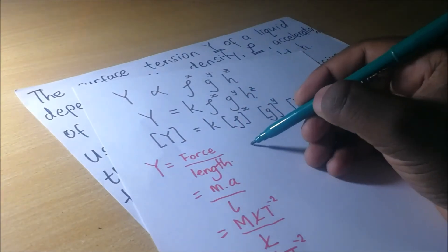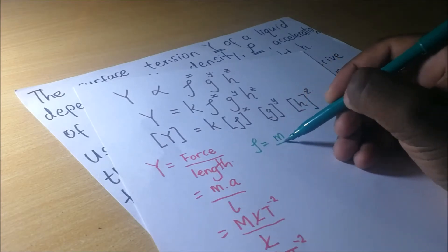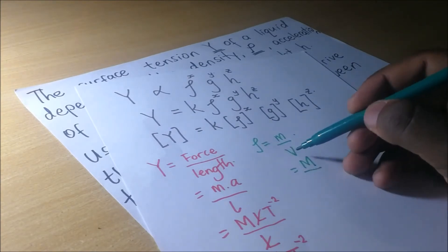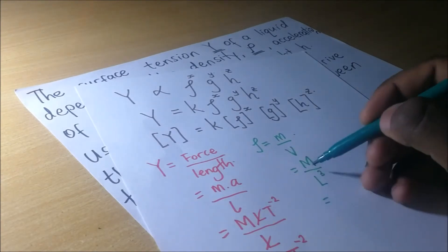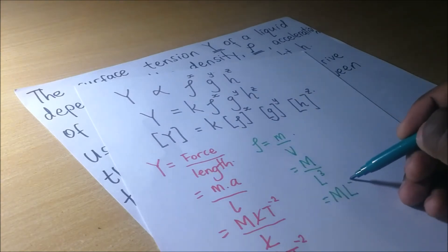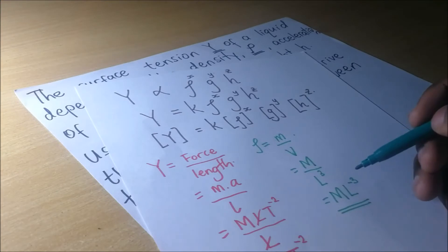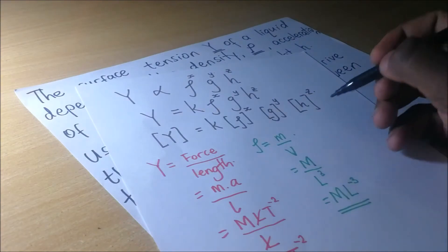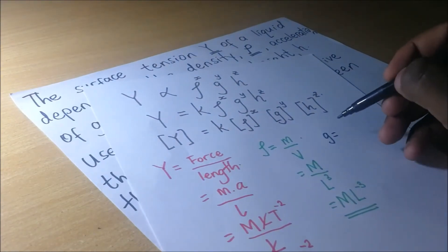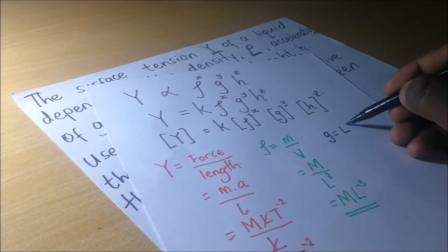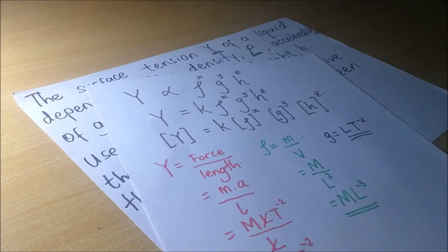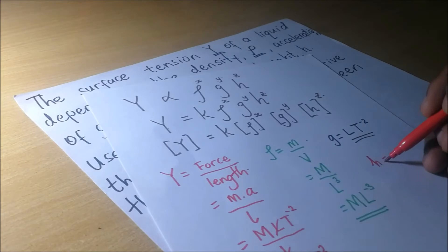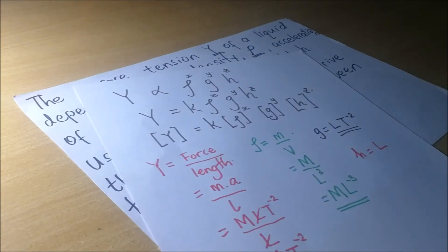For density, it is mass over volume, giving M·L⁻³. For gravity, it is acceleration: L·T⁻². For height, the dimensions are simply L. Now that we have the dimensions of all quantities, we substitute them into our expression.